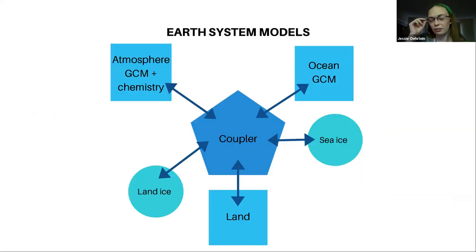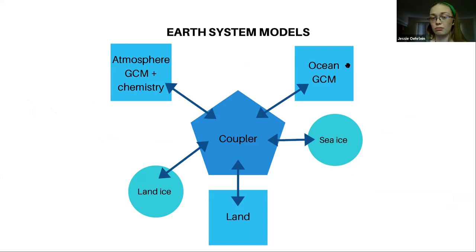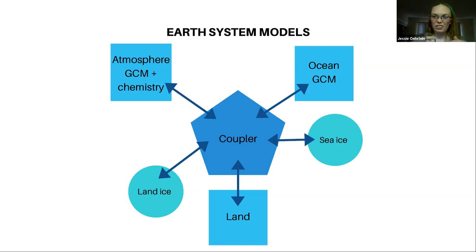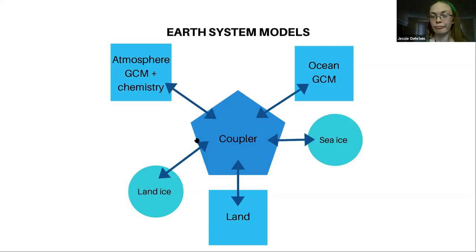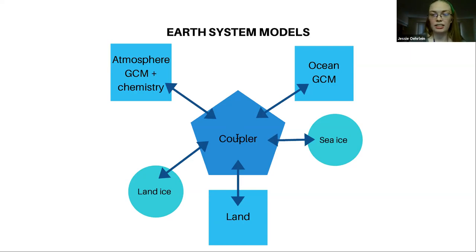General circulation models are part of Earth system models. We have the GCM for the atmosphere along with atmospheric chemistry calculations, a GCM for the ocean, and models for land, sea ice, and land ice. These all serve as boundary conditions for each other, but for simplicity they don't talk directly — they talk to a central piece called the coupler. This means we can fiddle with individual model components or switch them out to do experiments without messing with how the pieces communicate.